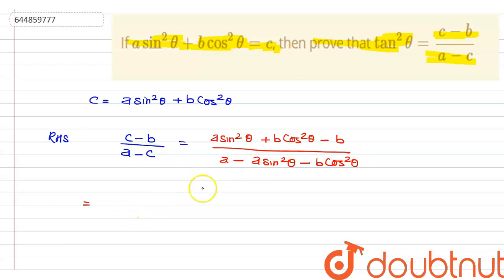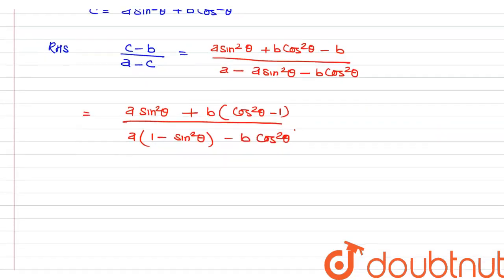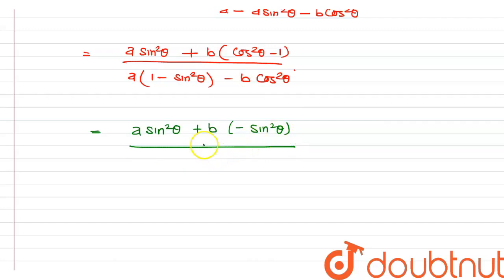Simplifying the numerator: a·sin²θ + b·(cos²θ − 1). Since cos²θ + sin²θ = 1, we have cos²θ − 1 = −sin²θ, so the numerator becomes a·sin²θ − b·sin²θ. The denominator simplifies as a·(1 − sin²θ) − b·cos²θ, which gives a·cos²θ − b·cos²θ.